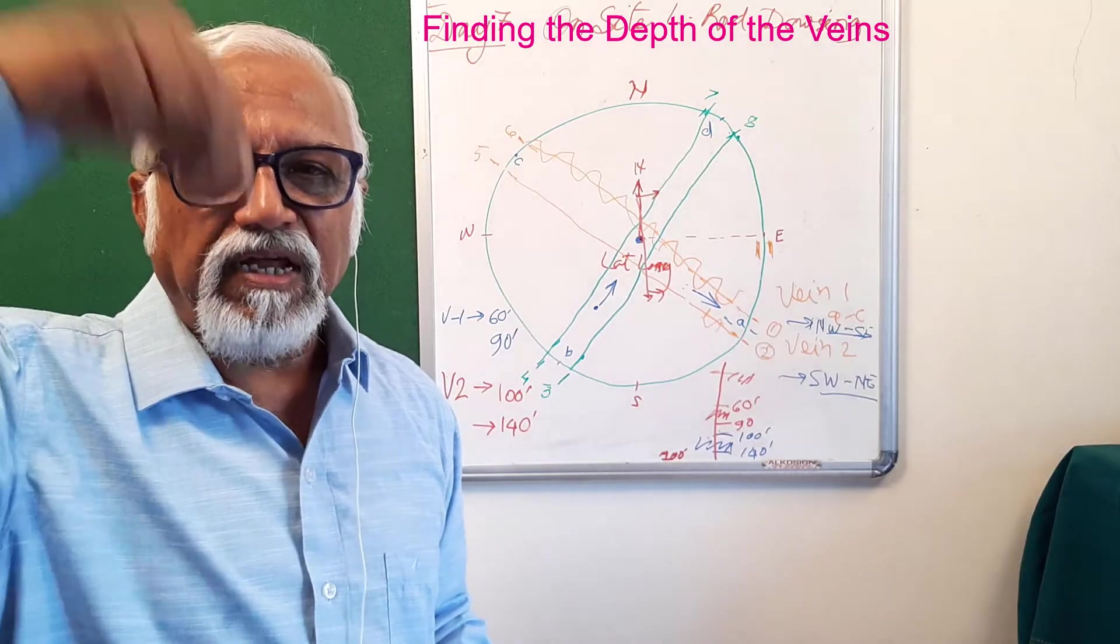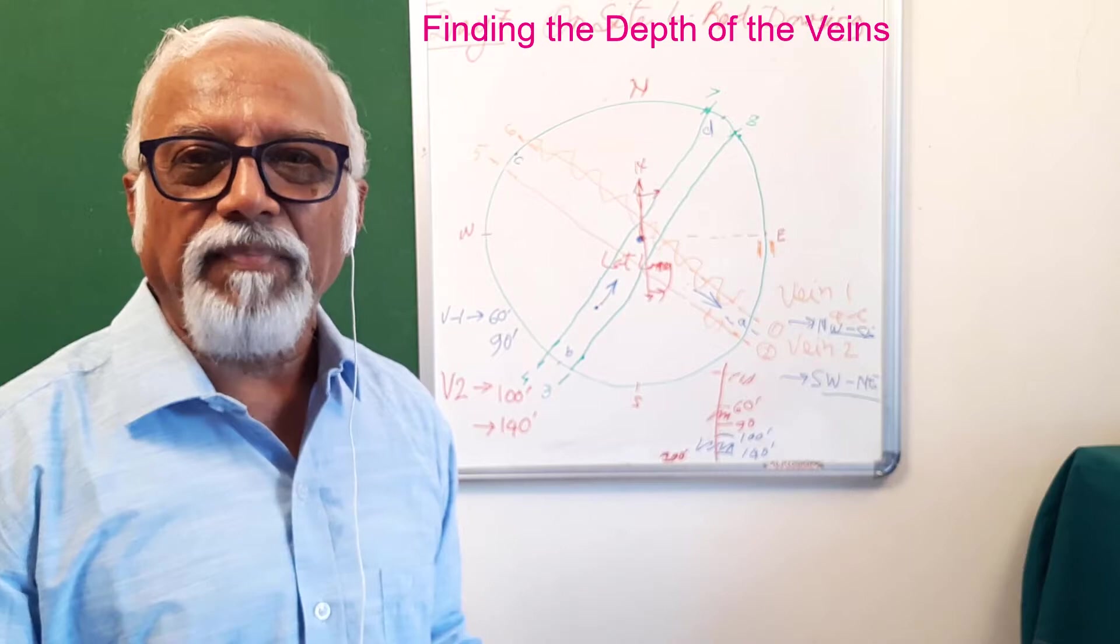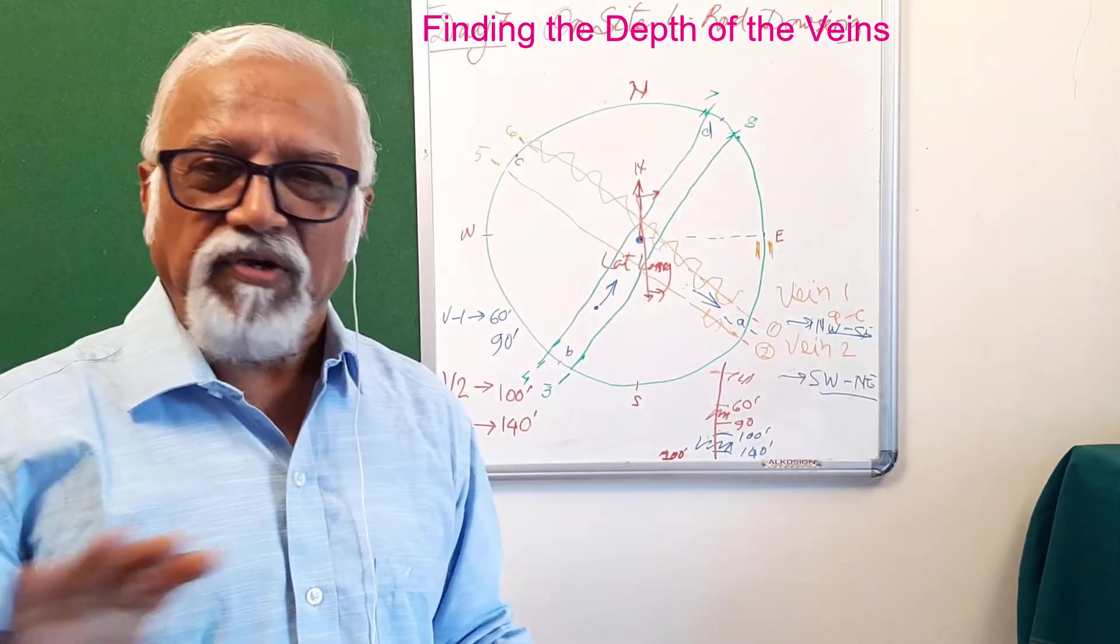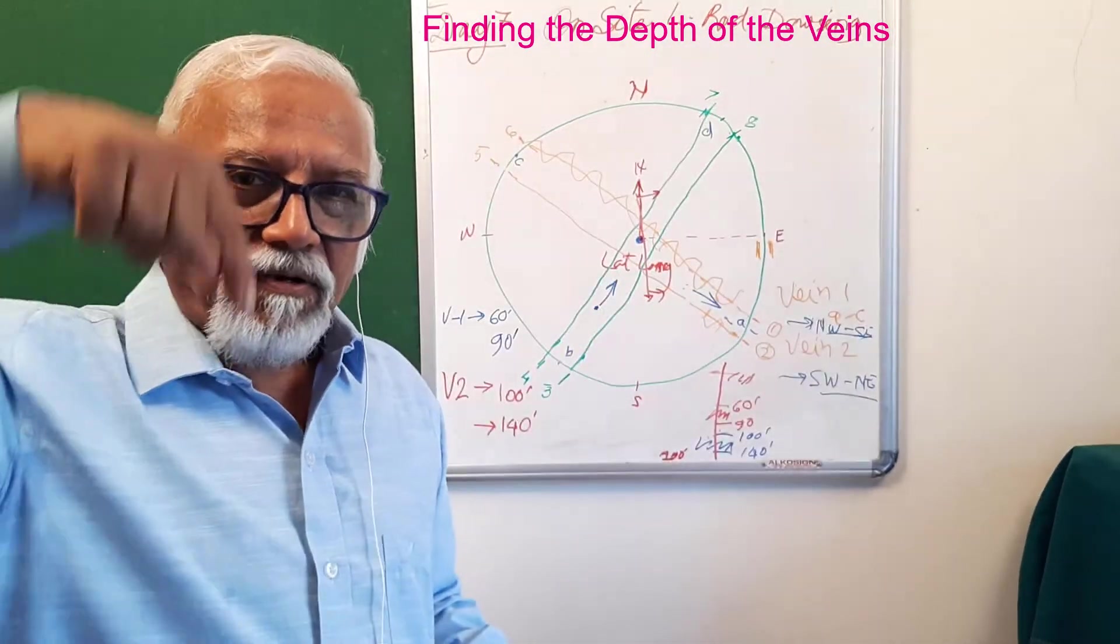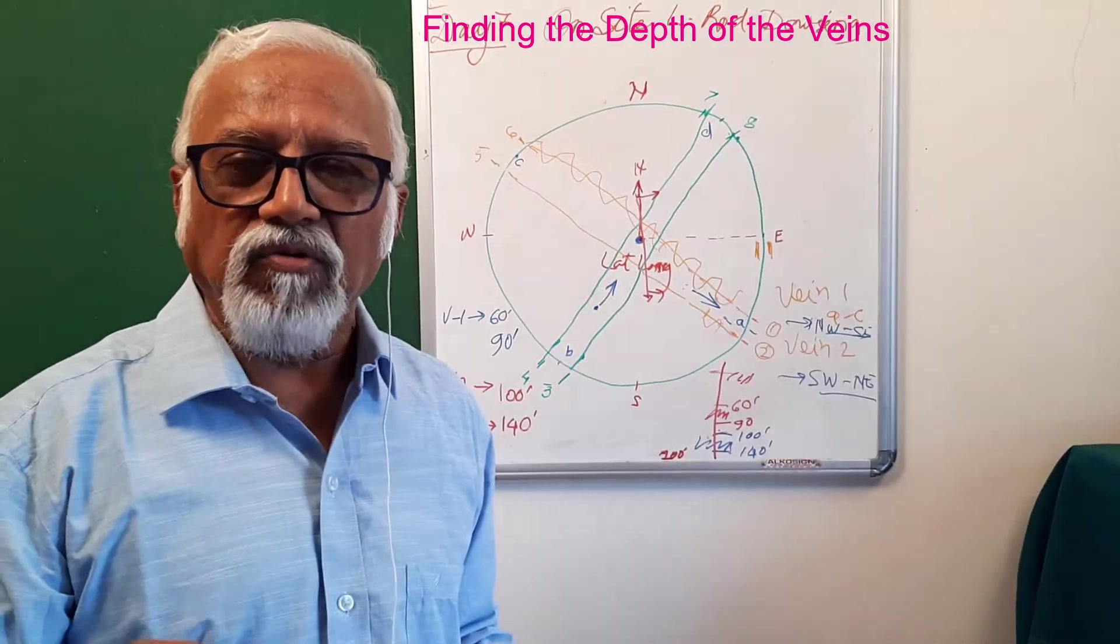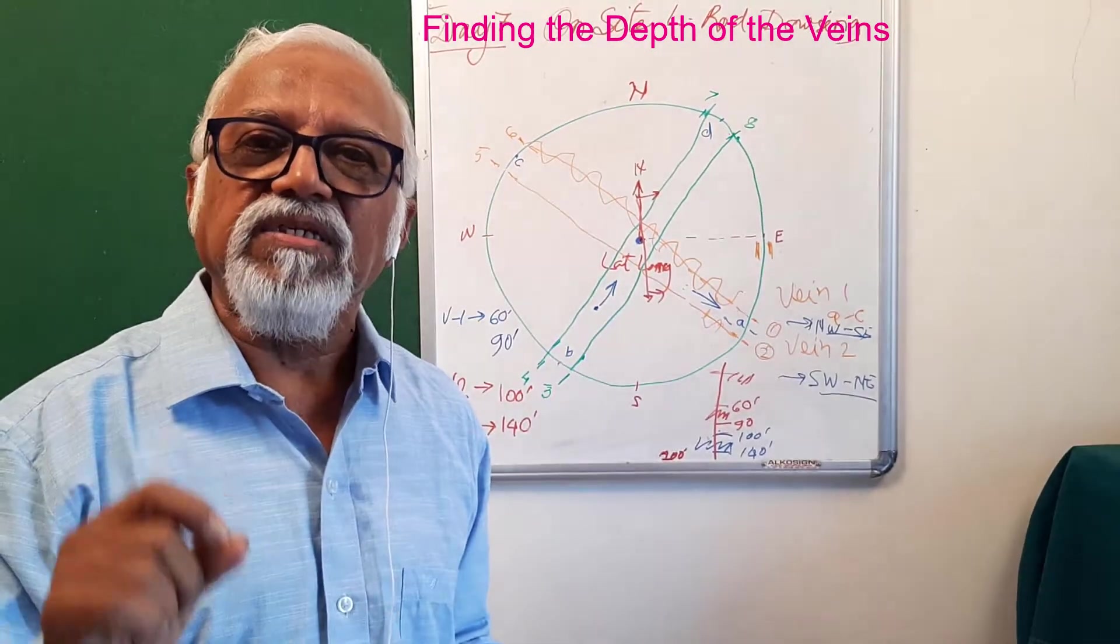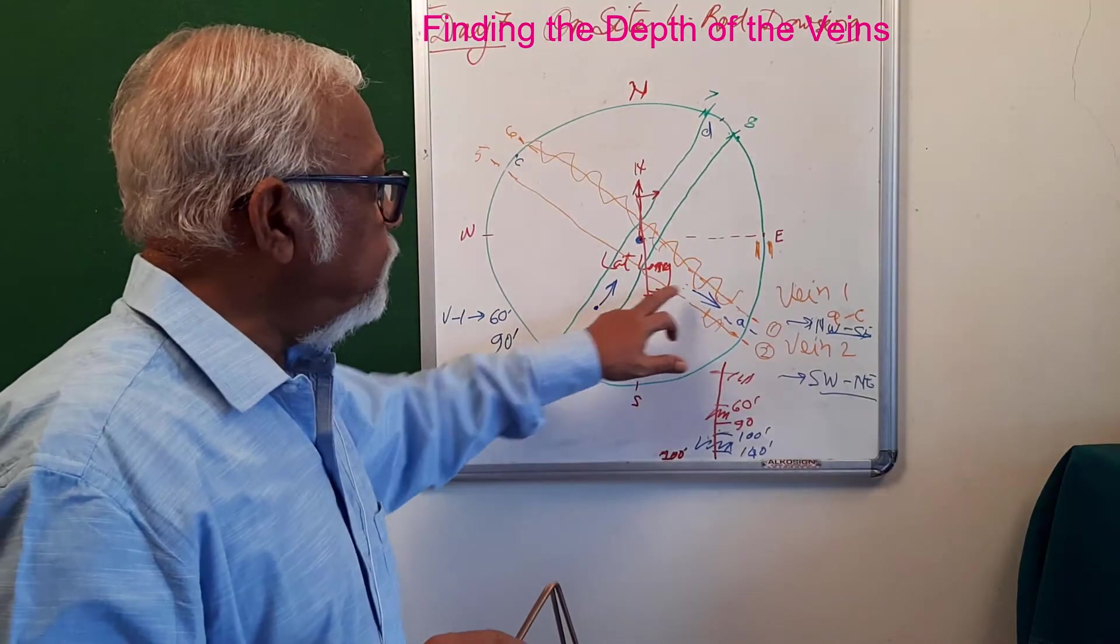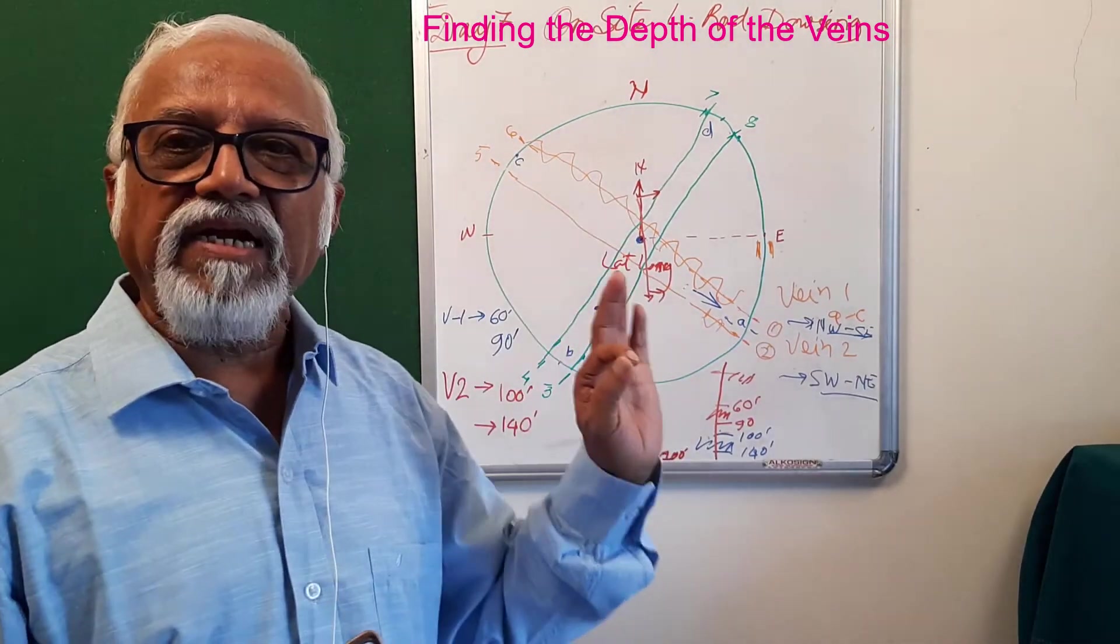Most of the time when the driller comes, you say 'Sir, you told us we'll get it above 60 feet, but at 60 feet nothing came.' You may get the vein - veins are there, veins won't change, veins would be perfect. But what skill you need to develop as a good dowser is giving the exact depth, which is the most important or difficult skill to develop. You need to practice at least four of these places and practice thoroughly.